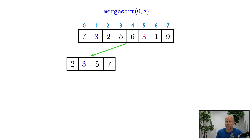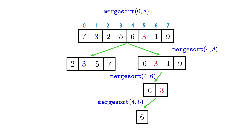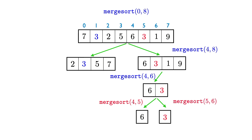Now we're going to start working through the second half of the vector. I'll go a bit faster since the calls are very similar to what happened in the first half. First we call merge sort(4, 8), which calls merge sort(4, 6), which calls merge sort(4, 5) — base case, returns — then merge sort(5, 6) — base case, returns. Now we merge back in merge sort(4, 6): one vector is just 6, one vector is just 3, they're in the wrong order so we swap them.